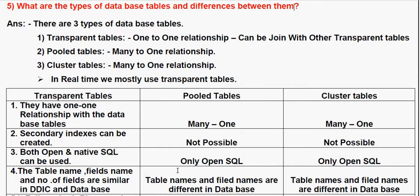A secondary index is also not possible with a cluster table. Both open SQL and native SQL can be used with a transparent table. For a pool table, only open SQL can be used, and similarly, for a cluster table, only open SQL can be used.